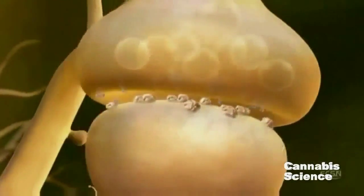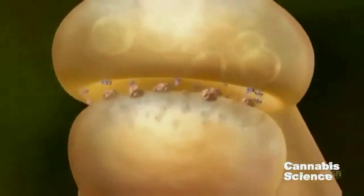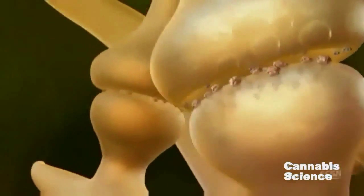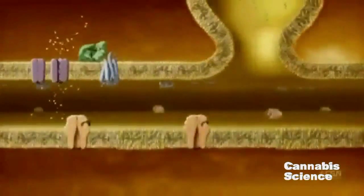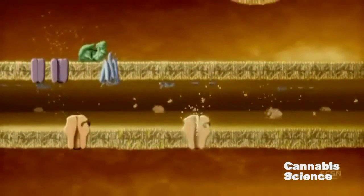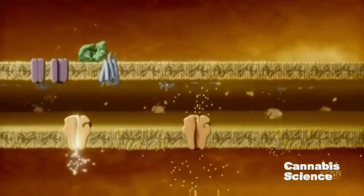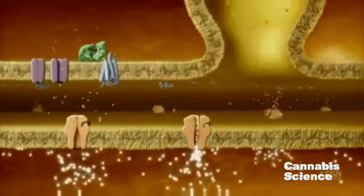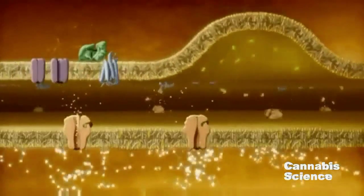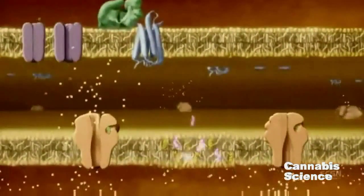Let's take a closer look at this mechanism using a glutamatergic neuron model. When an action potential reaches the axon terminal, membrane depolarization triggers the release of glutamate. Glutamate binds to post-synaptic glutamate receptors, inducing calcium channels to open. During periods of intense neural activity, calcium accumulates in the post-synaptic neuron.